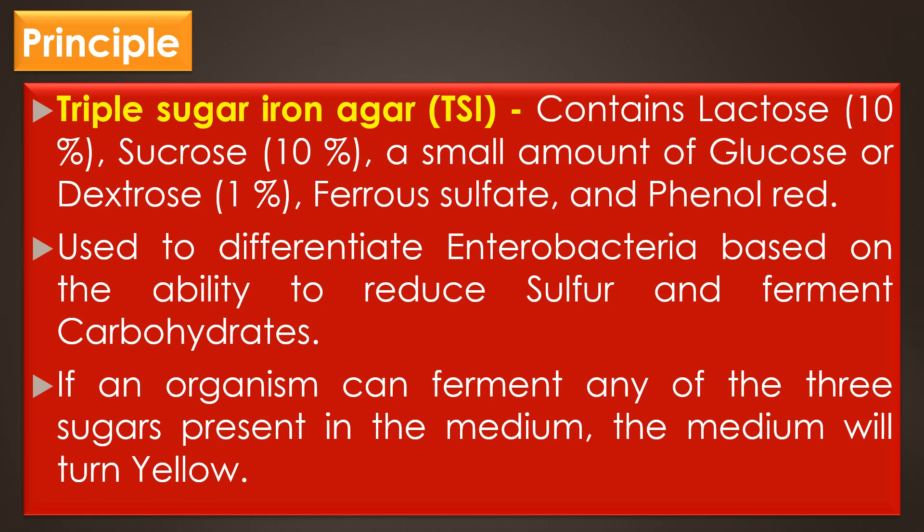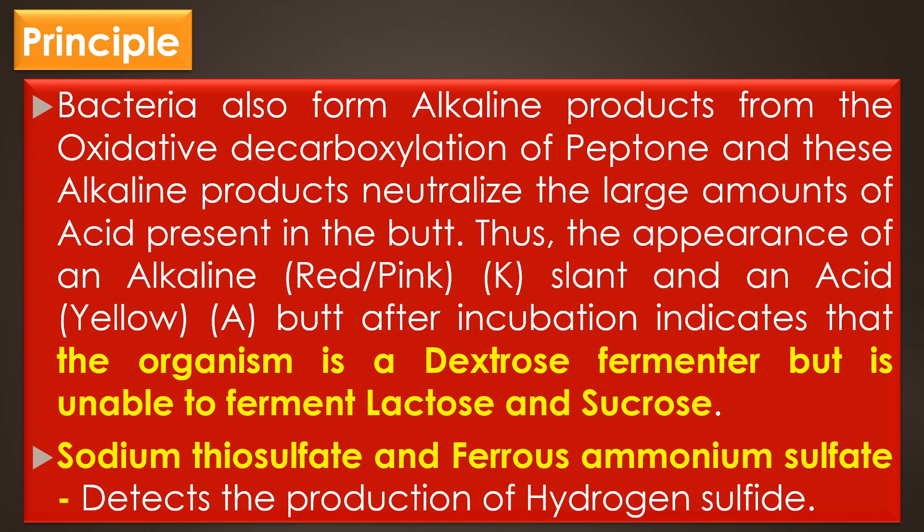With the phenol red indicator, if an organism can ferment any of the three sugars present in the medium, the medium will turn yellow. Growing bacteria also form alkaline products from the oxidative decarboxylation of peptone, and these alkaline products neutralize the large amount of acid present in the butt. Thus, the appearance of an alkaline, that is red or pink slant, and an acidic, that is yellow butt, after incubation indicates that the organism is a dextrose fermenter but is unable to ferment lactose and sucrose.